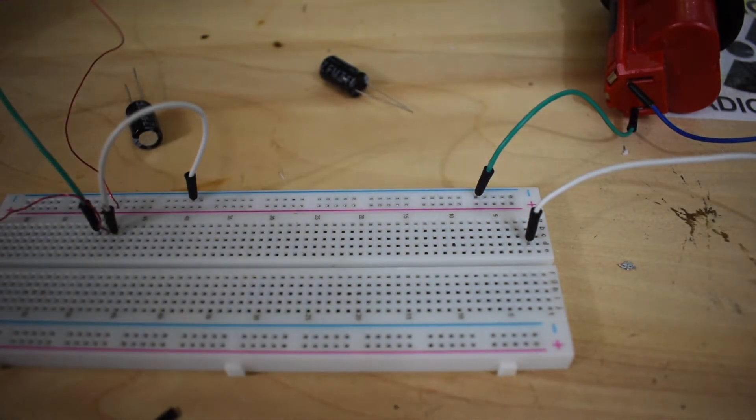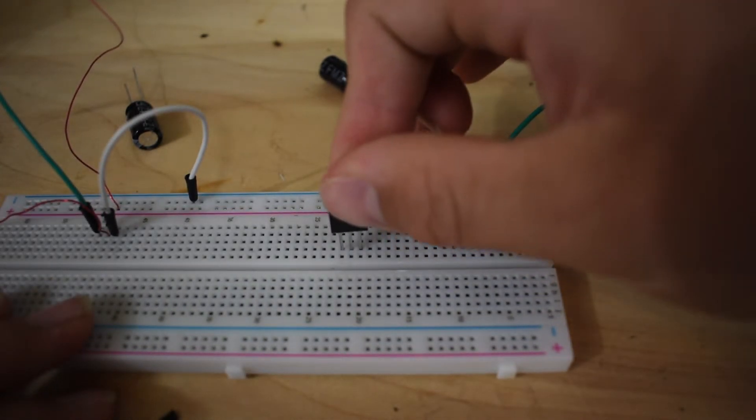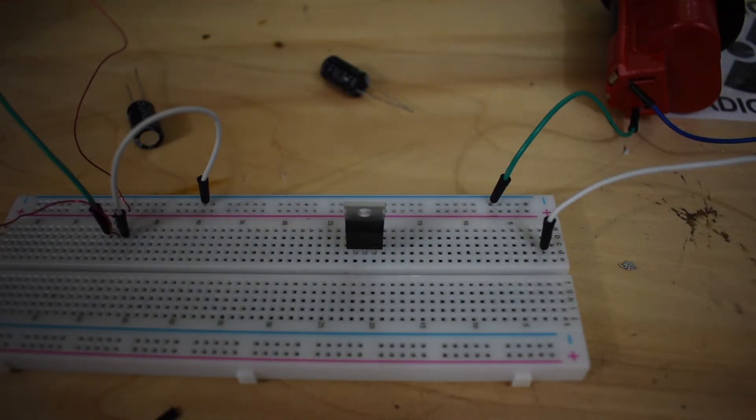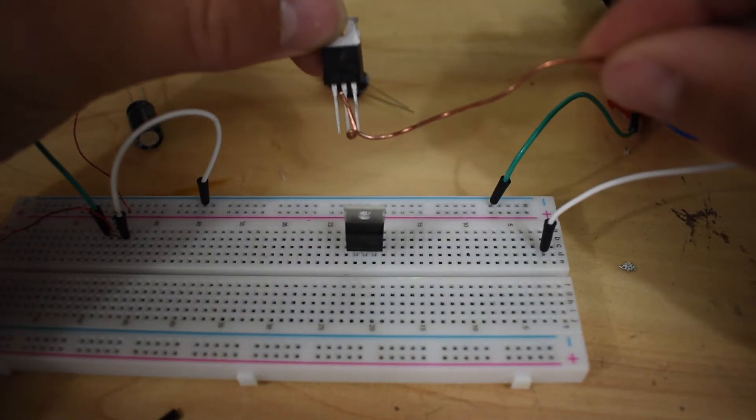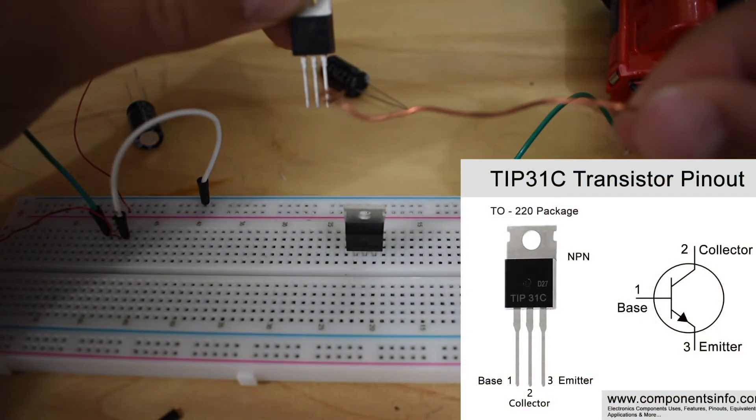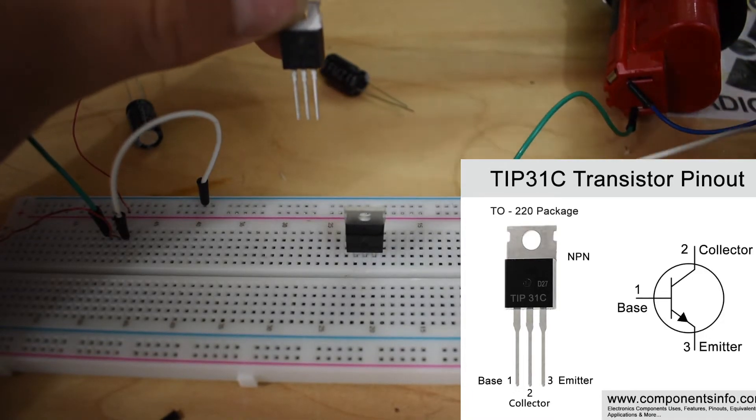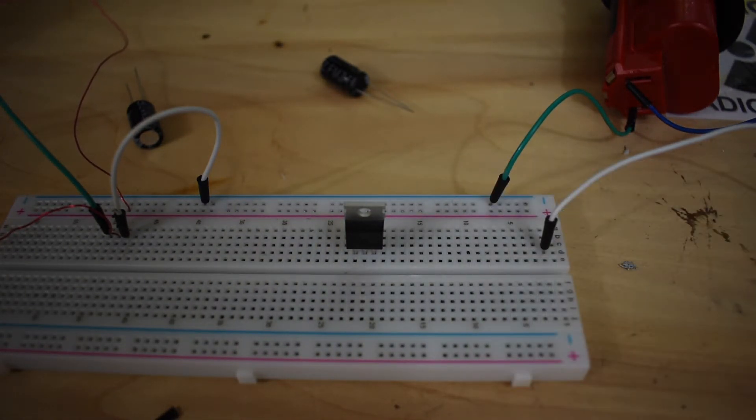So first you're going to need your TIP-31C NPN transistor and you're going to want to plug that in anywhere on your breadboard. Next you're going to need some jumper wires. Now TIP-31C transistors, their pinout is slightly different from normal NPN transistors. So starting off with your TIP-31C, this pin over here, if you're looking at it this way, this is going to be your base. The middle pin over here is going to be your collector and the last pin over here is going to be your emitter. Your emitter you're going to want to connect to ground. So we're going to use that just by doing a jumper wire and connecting it to the negative rail on your breadboard.